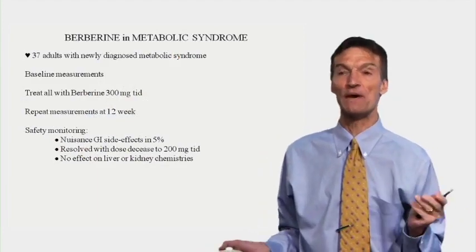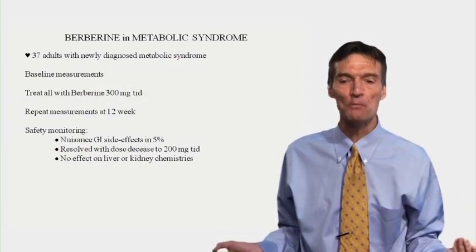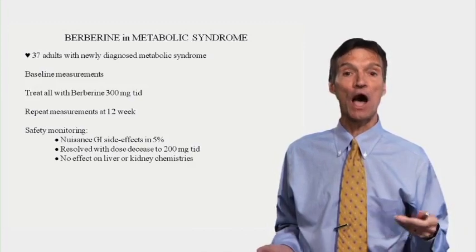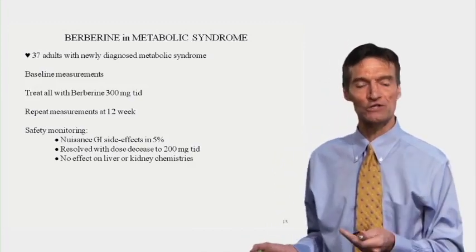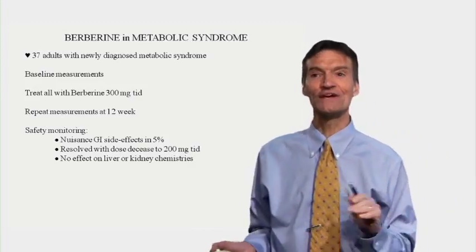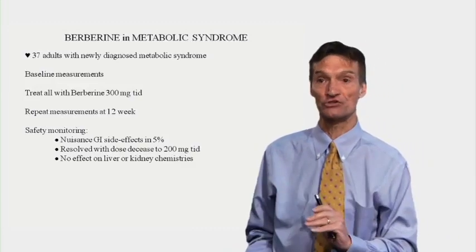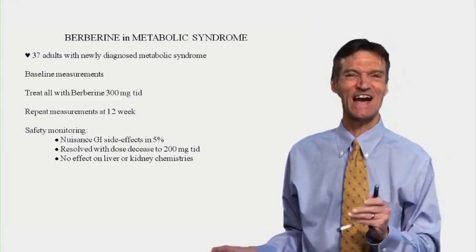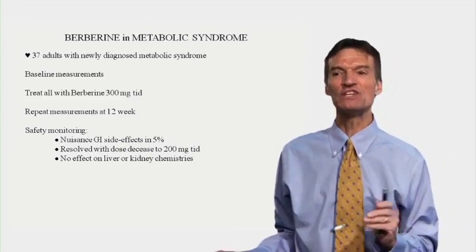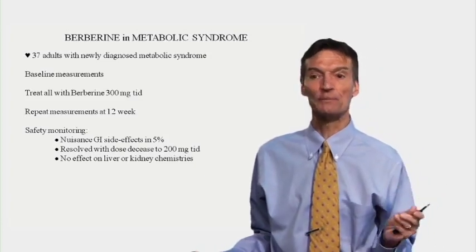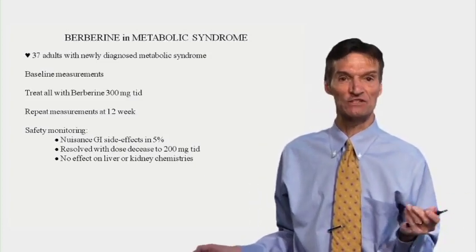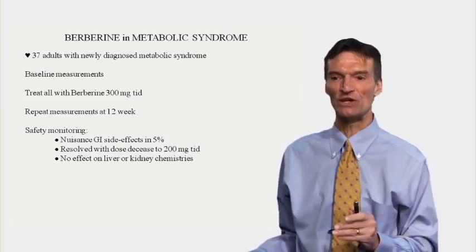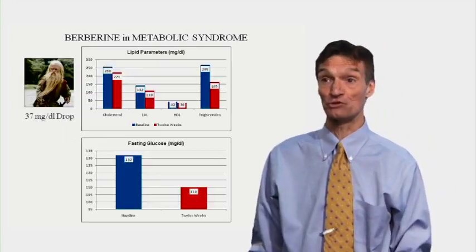Let me give you a clinical study of berberine in metabolic syndrome. Most of my new patients have metabolic syndrome — the constellation of belly fat, visceral fat, high blood pressure, low HDL, high triglycerides, and high sugar. 37 adults with newly diagnosed and not yet treated metabolic syndrome: do baseline studies, treat them all with berberine 300 milligrams TID — three times a day — repeat measurements at 12 weeks. Berberine therapy was safe; nuisance GI side effects in 5% — constipation, diarrhea — resolving with a dose decrease. No adverse effects on liver or kidney chemistries.